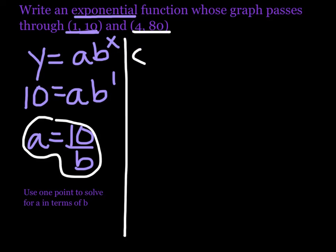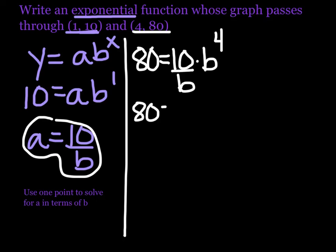So we'll say 80 equals, and then instead of a, I'm going to put 10 over b, times b to the x, where x is 4. So now when we simplify this, I have 80 equals 10, and then b to the 4th divided by b is just b to the 3rd. If I divide both sides by 10, I get 8 equals b to the 3rd, which means that b is the cubed root of 8, which is 2.